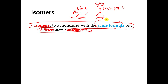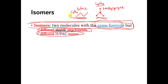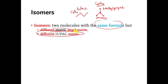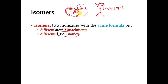There's another way to define isomers, and it might be a little bit better. Isomers are molecules that have the same formula, but they have different IUPAC names. If two molecules are identical, they will have the same formula and the same IUPAC name. If they are isomers, they will have the same formula but different IUPAC names. I'll show you some examples in the next couple of slides.